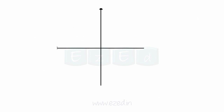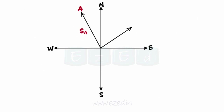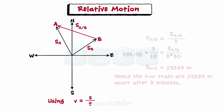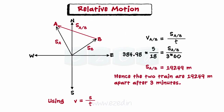Now draw the position vector of train A and train B. The relative position of A with respect to B is shown by the vector. Since velocity equals distance divided by time, on substituting the respective values we get the relative position of train A with respect to train B after 3 minutes.